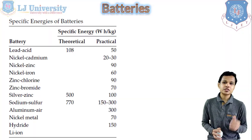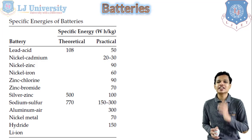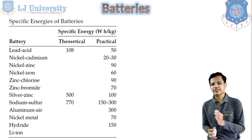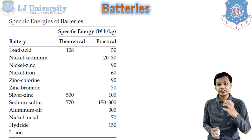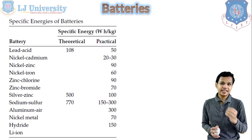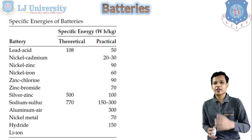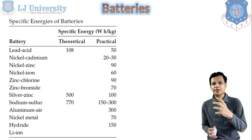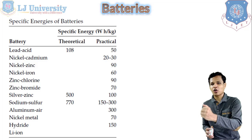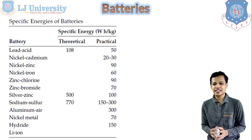Let's start. Here you can see a table showing the specific energy of various batteries — both theoretical and practical values. These two differ because in practice the specific energy is sometimes lesser due to losses, insulation issues, impurities, and problems in discharge and charging of the batteries.